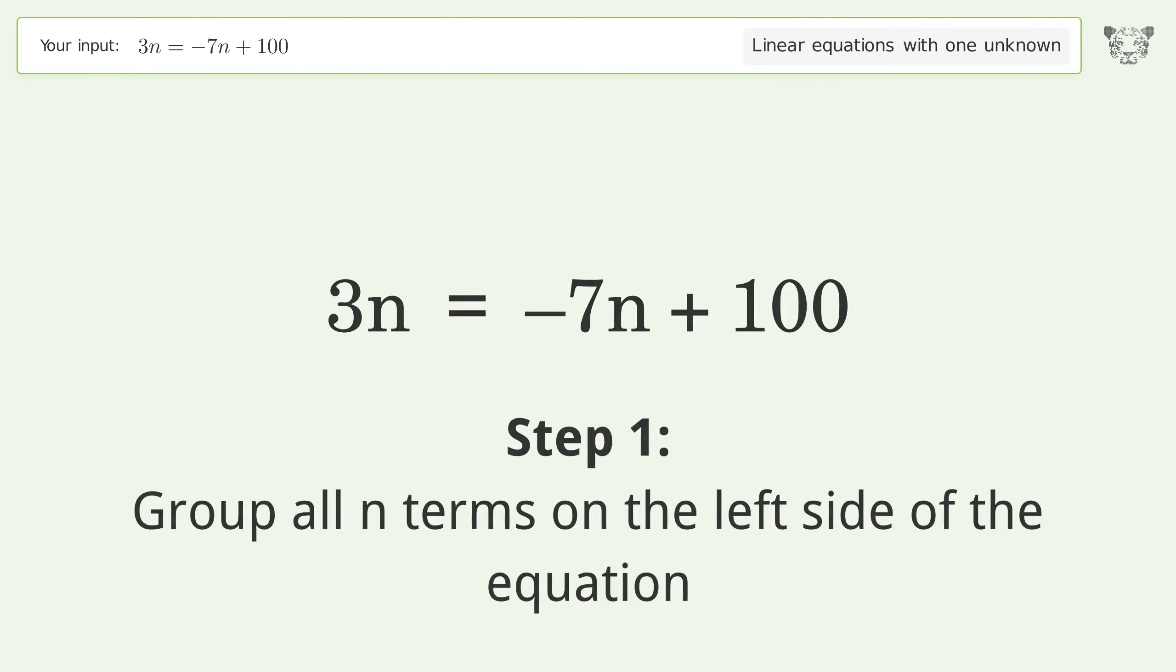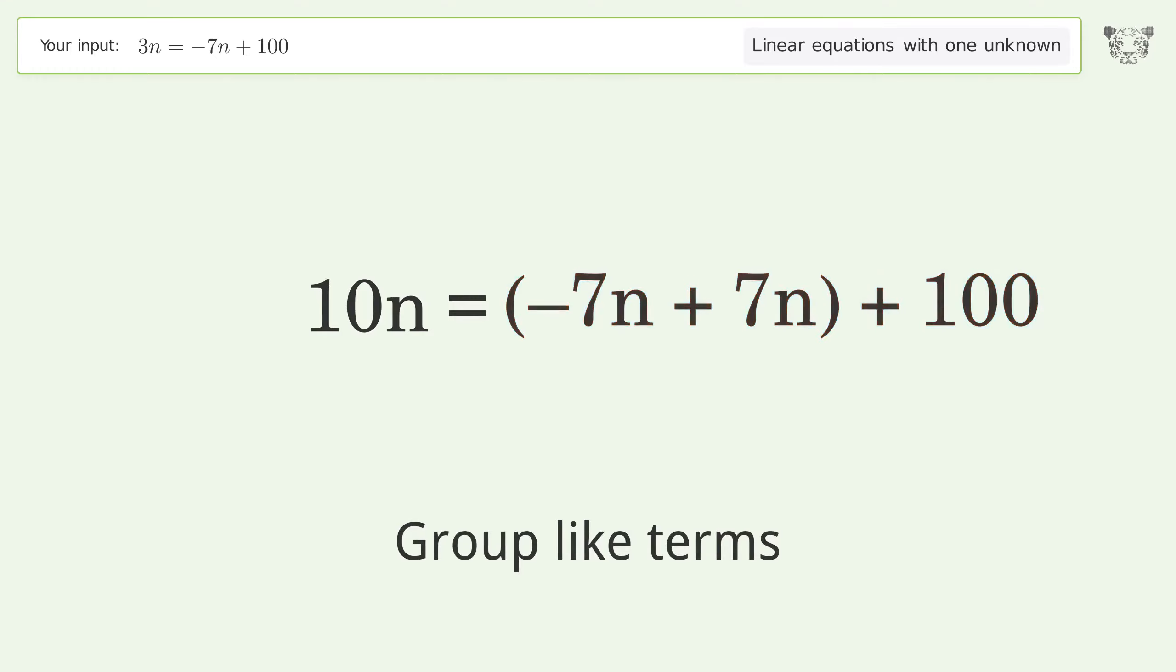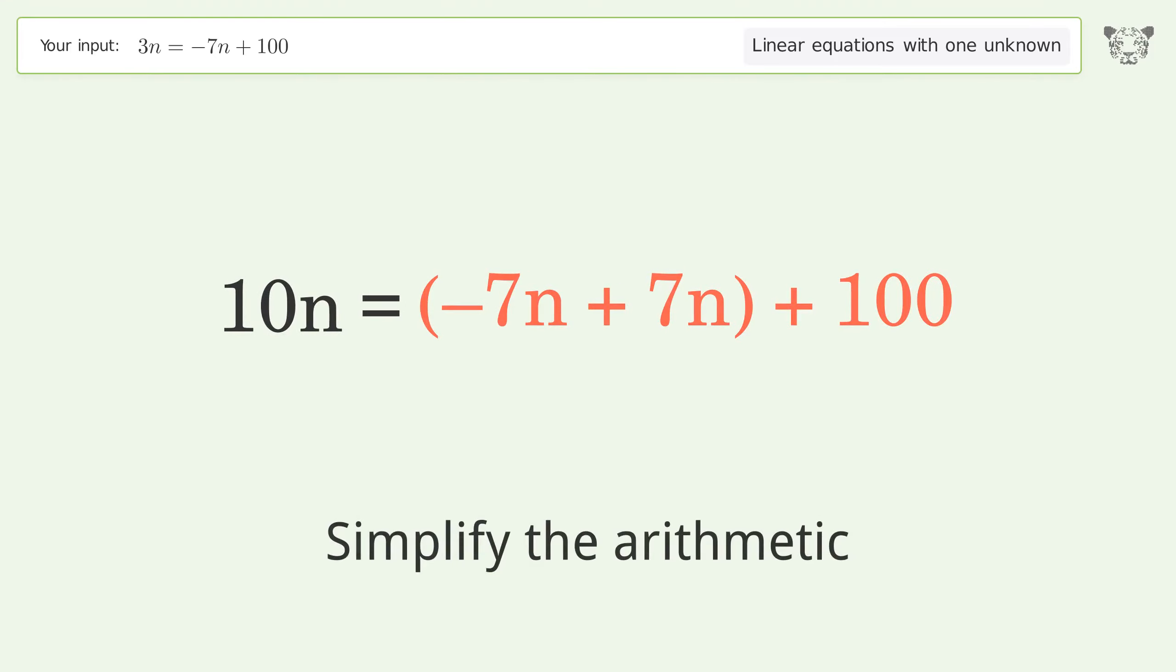Group all n terms on the left side of the equation. Add 7n to both sides. Simplify the arithmetic. Group like terms. Simplify the arithmetic.